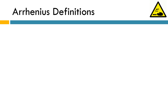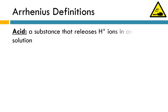If you talked about acids and bases in middle school, chances are you learned the Arrhenius definitions. According to the Arrhenius definition, a substance that releases H+ ions in an aqueous solution is classified as an acid. We talked about this a little bit in the previous lesson. The presence of H+ ions in solution, especially if they're there in a high concentration, is indicative that we're looking at an acid.